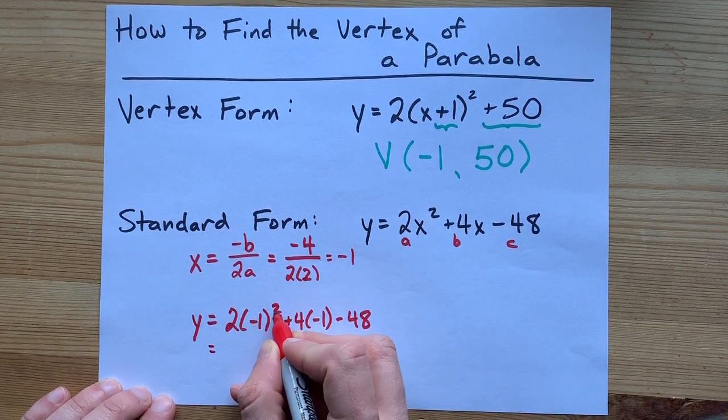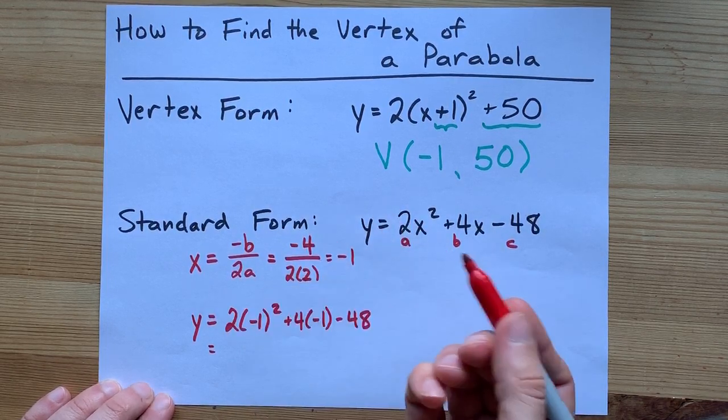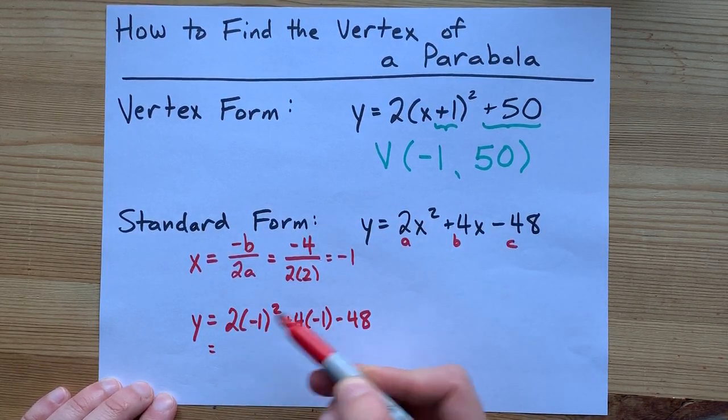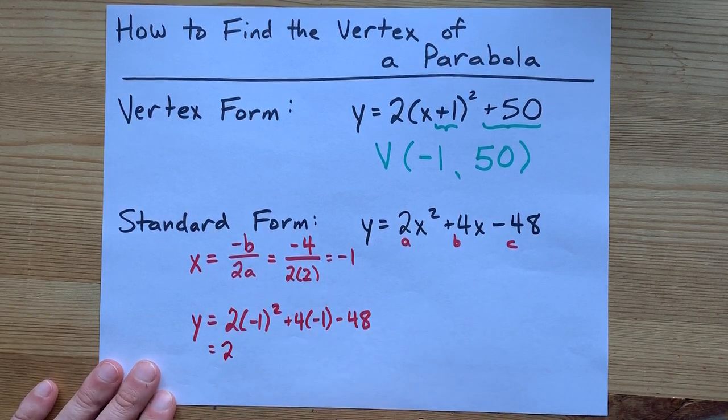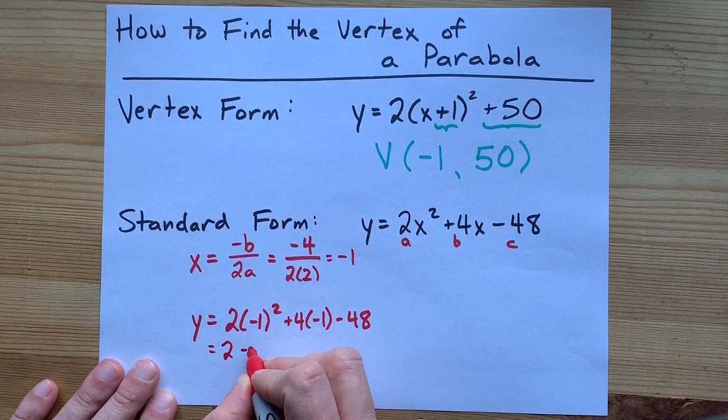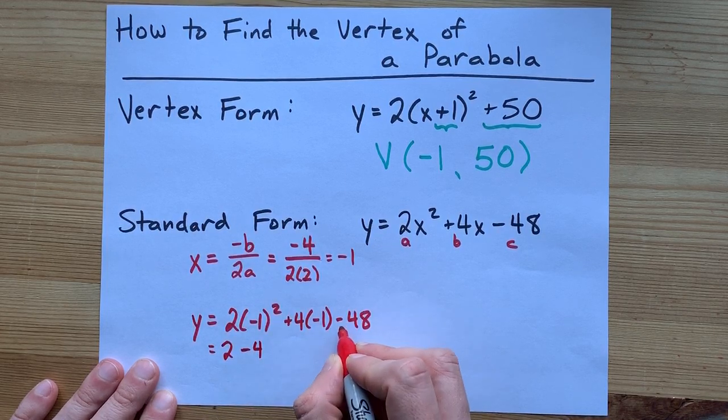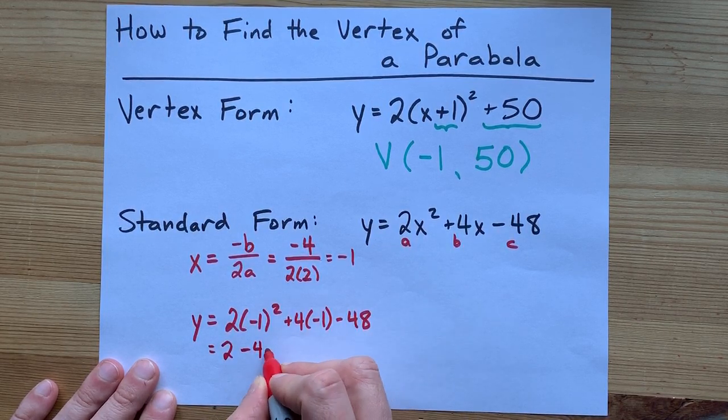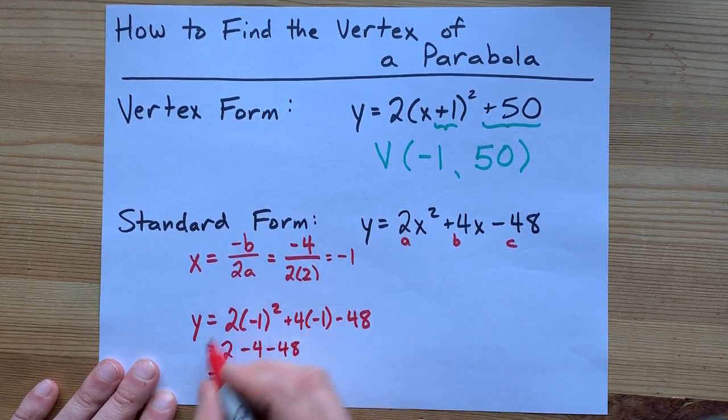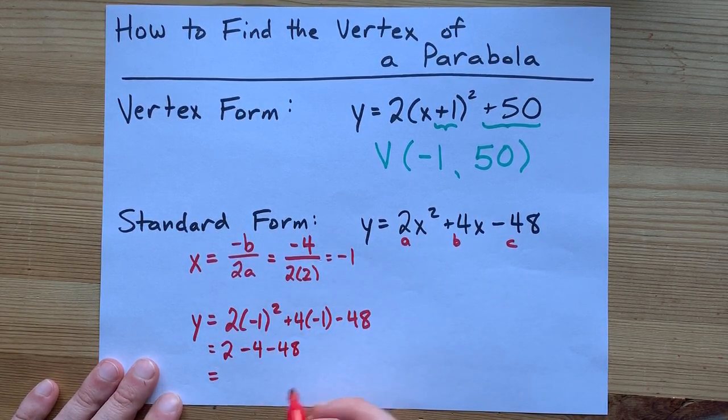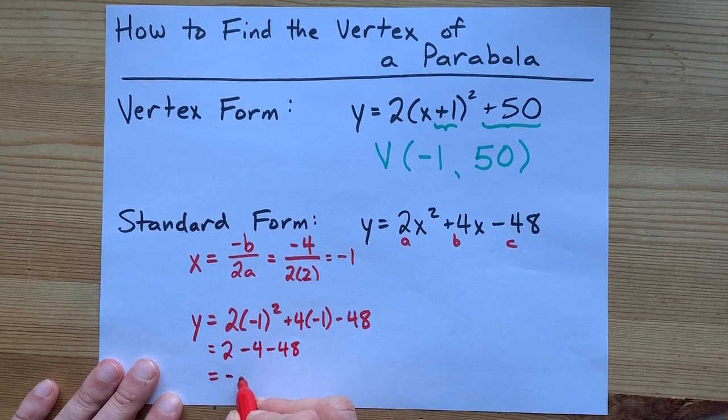Now, negative 1 squared is positive 1, because when you multiply a negative by itself, it becomes positive. That gives me positive 2 here in the end. 4 times negative 1 is negative 4, and negative 48 is negative 48. And when you put all these together, you end up with negative 50.